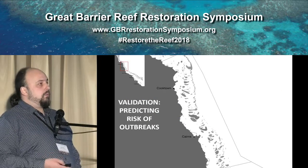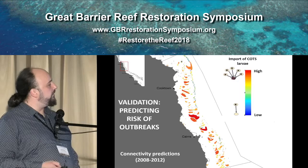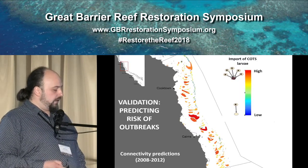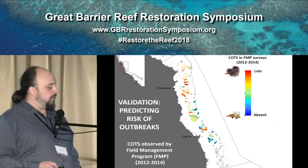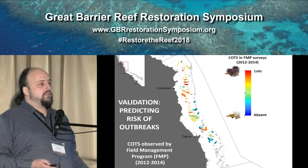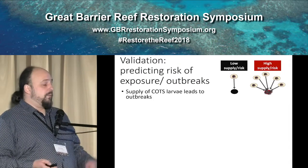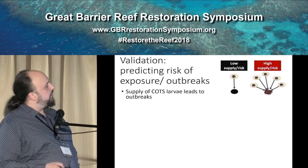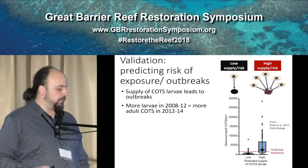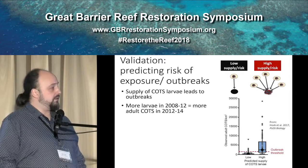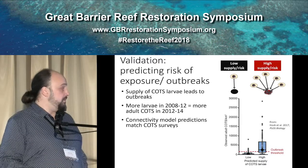We also wanted to validate these models — to see that they're actually doing what they're supposed to be doing. We did this by comparing connectivity predictions between 2008 and 2012 against COTS field survey data. This represents larval accumulation for a four-year period before the FIMPS management program started surveying reefs. The idea is that reefs with more exposure to larvae are going to be more likely to have adult COTS later. When we compare the predictions to the data — low supply means low risk later, high supply means high risk — this is actually what happens. Reefs with low predicted exposure to COTS larvae had fewer adult COTS in later surveys, as opposed to reefs that had high larval supply, so the connectivity model predictions match the later surveys.